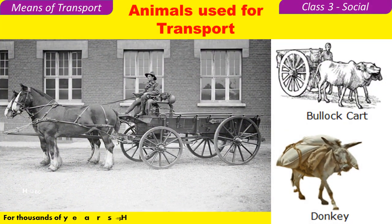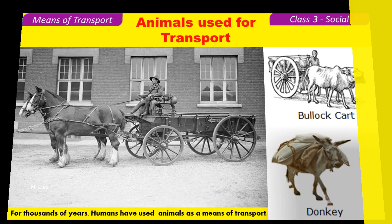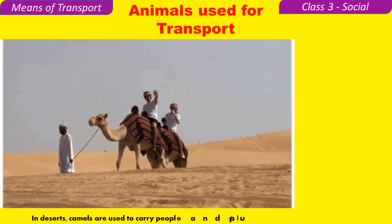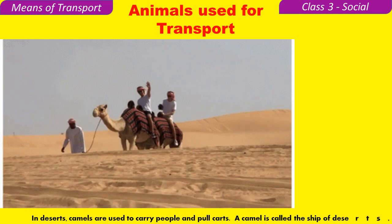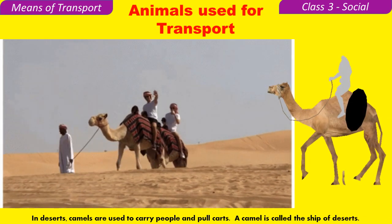Animals used for transport — for thousands of years, humans have used animals as a means of transport. In deserts, camels are used to carry people and pull carts. A camel is called the ship of the deserts.